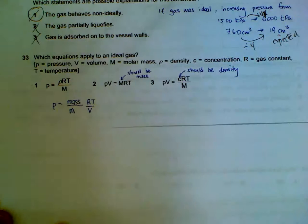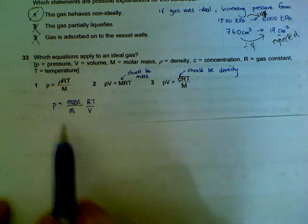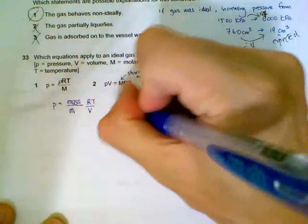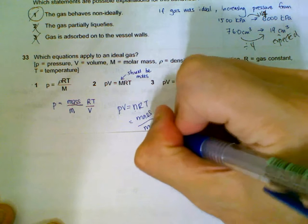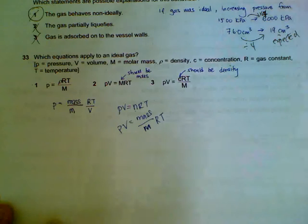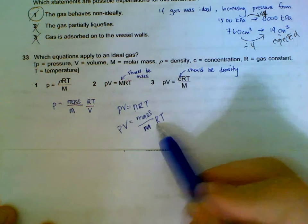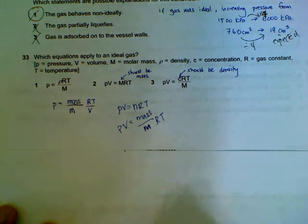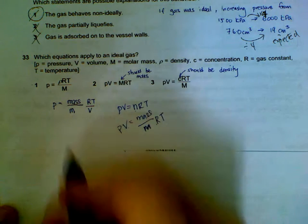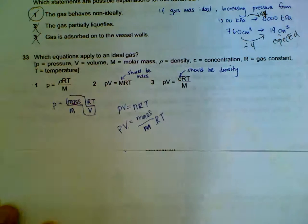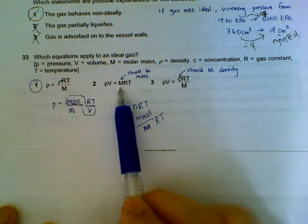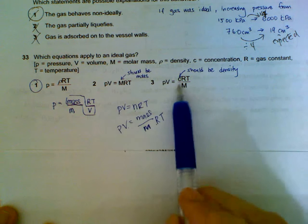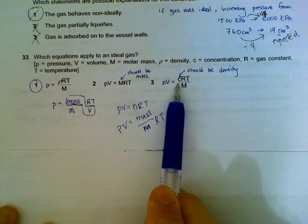33, which one applies to an ideal gas? You have to be familiar with PV=nRT, gas equation. And then from the number of moles we can split up to mass over MR, which is the big M. We have this, PV equals to mass over MR times RT. And then we bring the V over, we have this equation. And we know that mass over volume is actually density. So density is reflected here. The rest of the terms becomes RT over M. So one is correct. This one should be number of moles, so it's wrong. This one should be density, not concentration. So two and three are wrong.